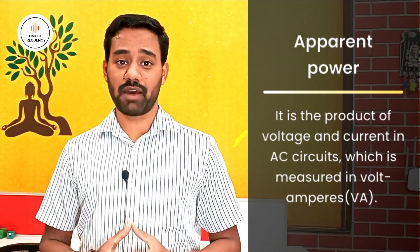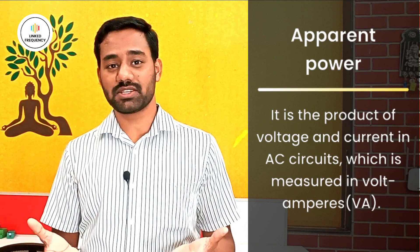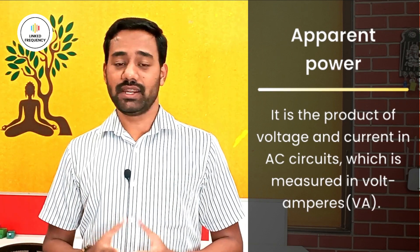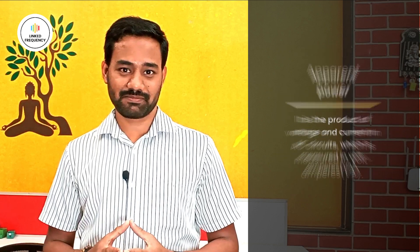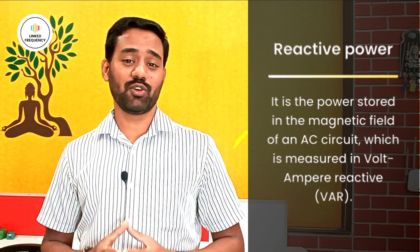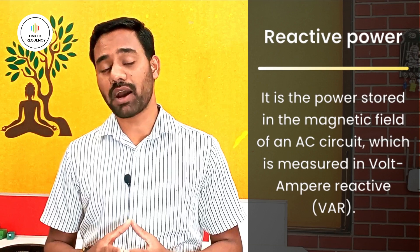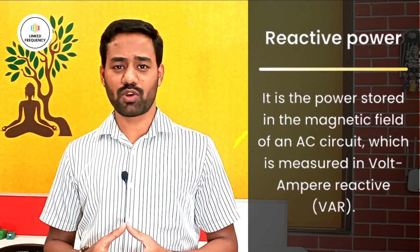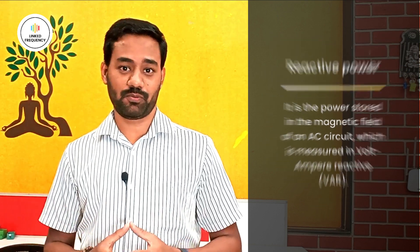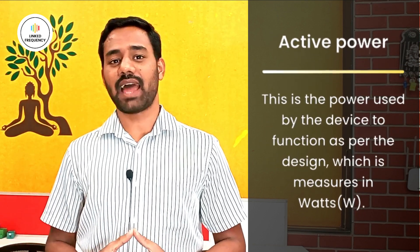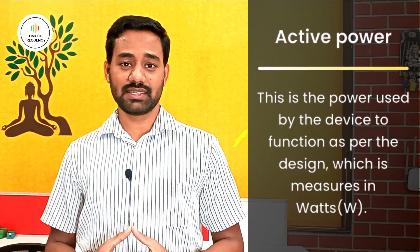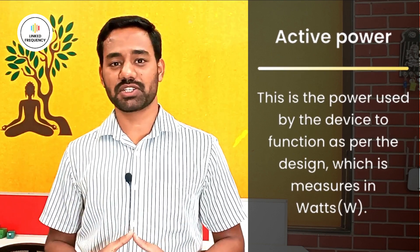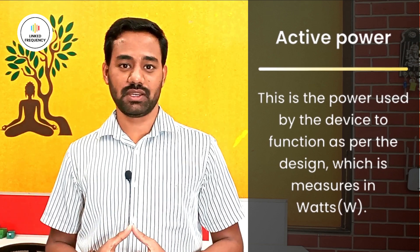The fifth one is Apparent Power — the product of current and voltage in an electrical application, measured in volt-amperes (VA). The sixth one is Reactive Power — the amount of power stored in the form of a magnetic field in an AC circuit, measured in volt-amperes reactive (VAR). The seventh and last one is Active Power — the power consumption of any electronic device as per its functionality or design specification, measured in watts. These are the seven types of power in the electronic industry.